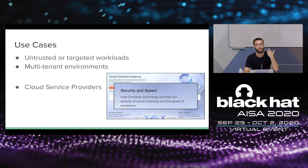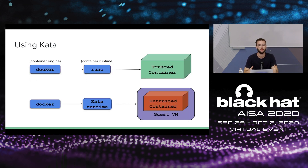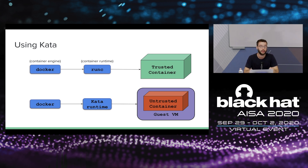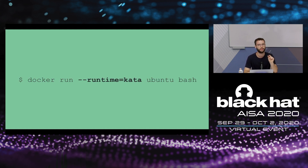How do you use Kata? In a normal container setup, you have the container engine (like Docker) and the container runtime — container engines don't really know how to run containers, so they defer to their defined runtime. Normally you'd use runC, the default industry standard runtime. But you can define Kata as the underlying runtime for untrusted containers, and now when you run that container with Kata, it will be deployed inside a virtual machine with an additional layer of isolation.